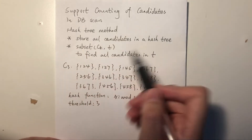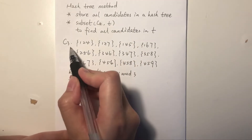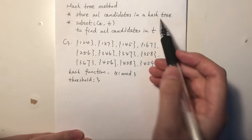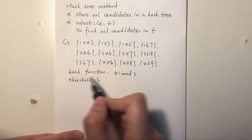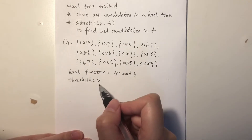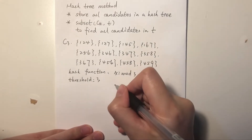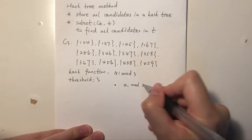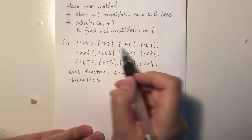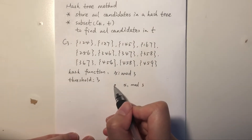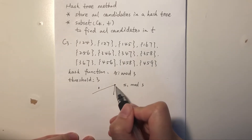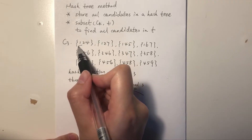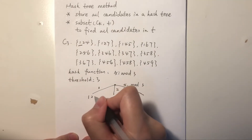First, we need to store all candidates in a hash tree. Let's say we have C3 — these are all candidates — and we need to store all of them in a hash tree. The hash function is x_i mod 3, and the threshold is 3. We start from the root, and x_i mod 3 for the root is x1 mod 3, meaning we hash the first element. There are three possible answers: 0, 1, or 2. For this candidate, 1 mod 3 is 1, so it goes to the branch for 1.